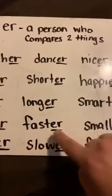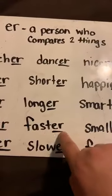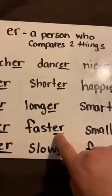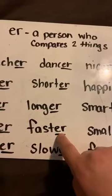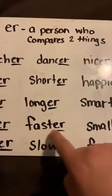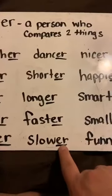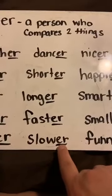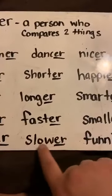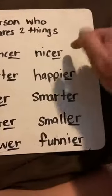Now these two could go both ways. A person who is fast — or the kangaroo is faster than the turtle. It's comparing the turtle to the kangaroo. And the same way with this one: the turtle is slower than the kangaroo. It's comparing two things. Or it can be a person who's slow. All right, very good. Next column!